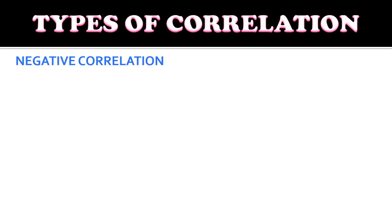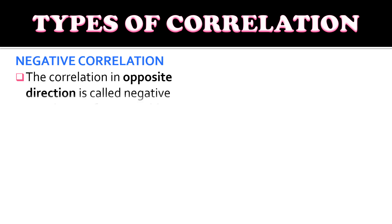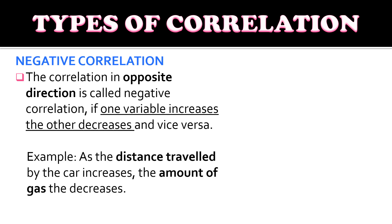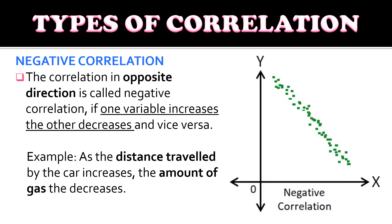Next type, we have negative correlation. The correlation in opposite direction is called a negative correlation — if one variable increases, the other decreases, and vice versa. An example of this is: as the distance traveled by a car increases, the amount of gas decreases. And for the graph, this is how it looks like.